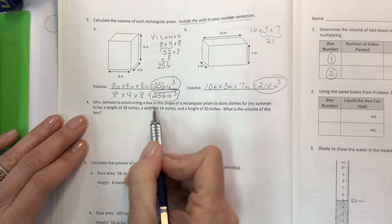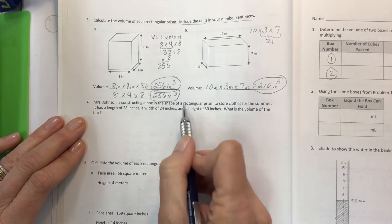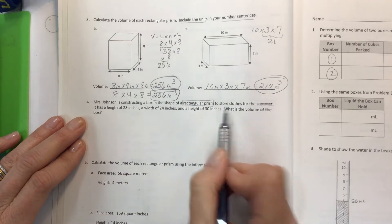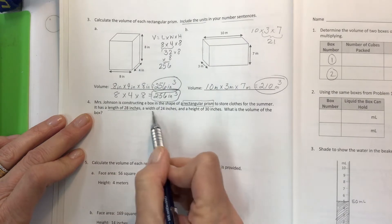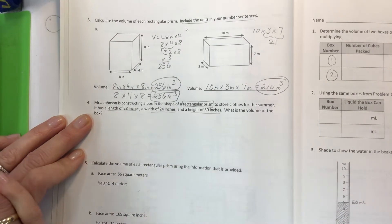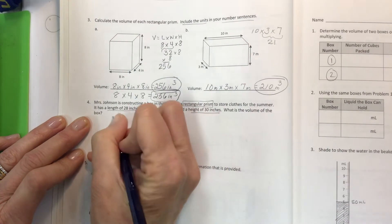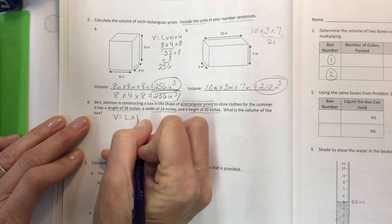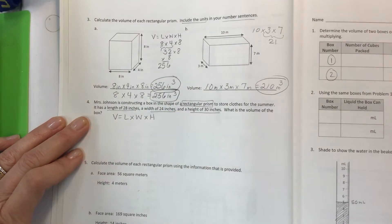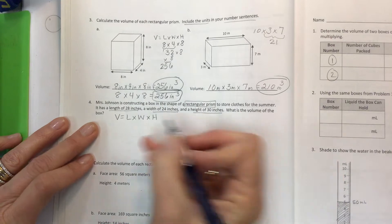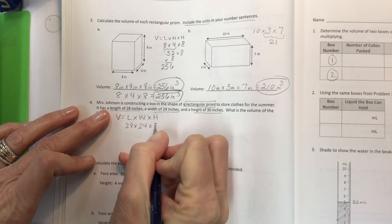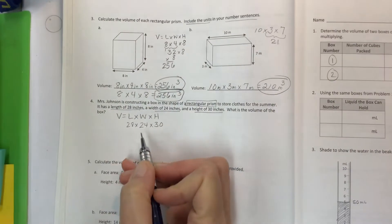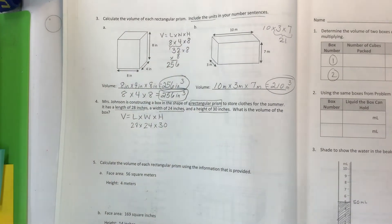Mrs. Johnson is constructing a box in the shape of a rectangular prism. It's nice when it's like this because you can use your formula to store clothes for the summer. It has a length of 28, width of 24, and a height of 30. What is the volume? The volume is the length times the width times the height. Write your formula and then fill in your numbers. It's given and given and given. And so no easy way about this. Got to do the standard algorithm with double digits.